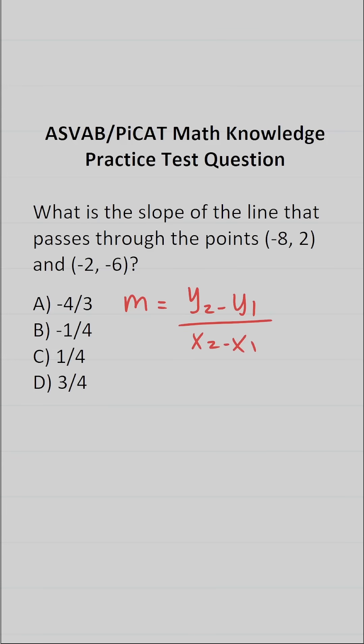Now you might be asking yourself, where do you get x1, y1, x2, y2 from? You get those values from your ordered pairs. So this is x1, y1. This is x2, y2, respectively.